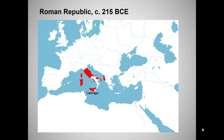From an art history standpoint, the conquest of the Greek colonies in Sicily was hugely important. The Roman army hauled back wagon loads of Greek sculpture and its citizens were hooked. From here on, Romans would be dedicated collectors and imitators of Greek art.